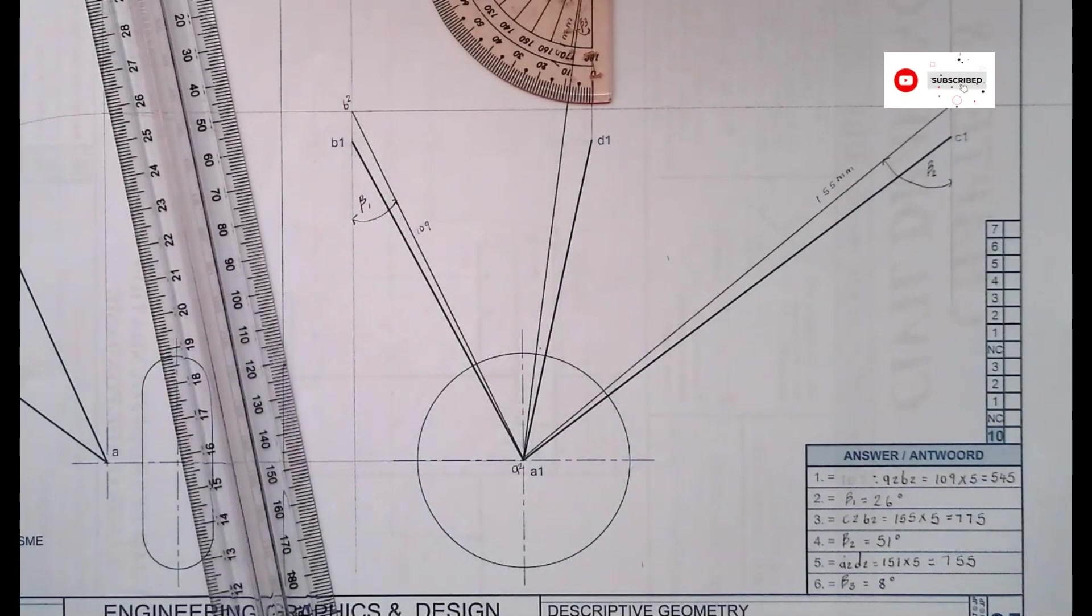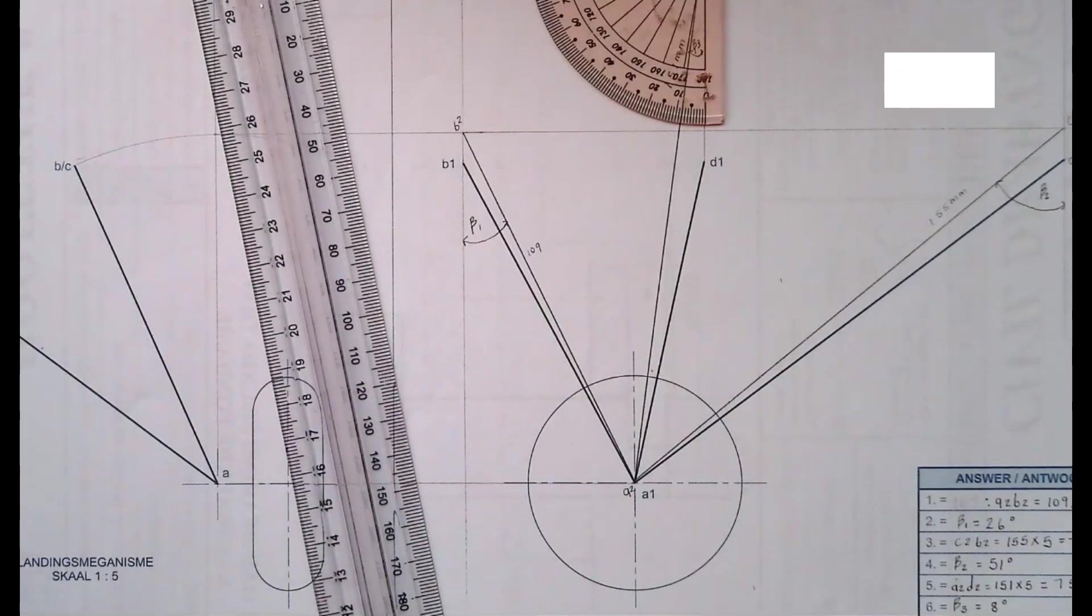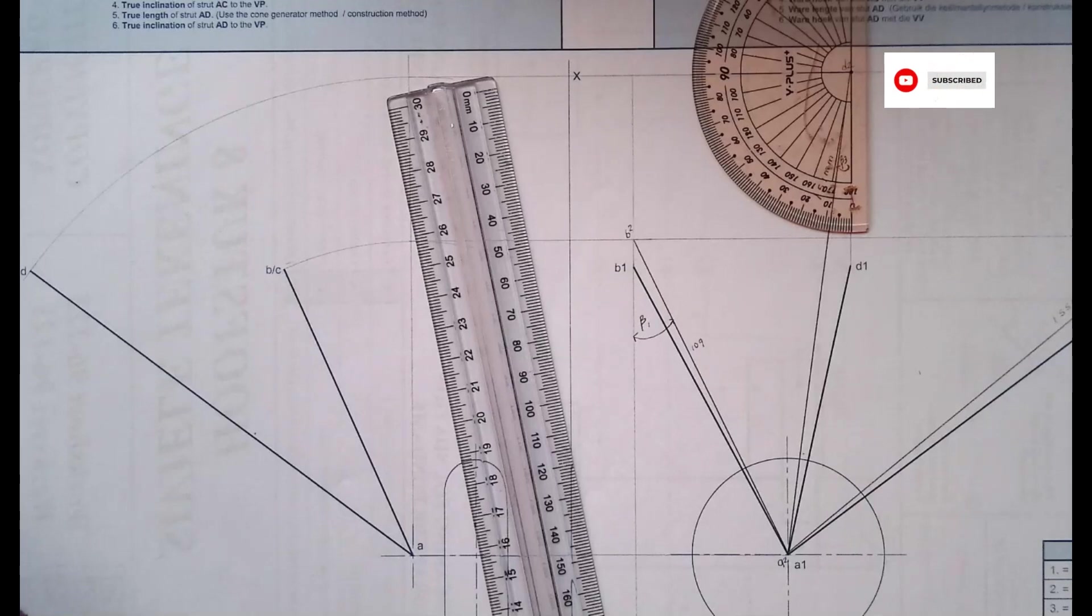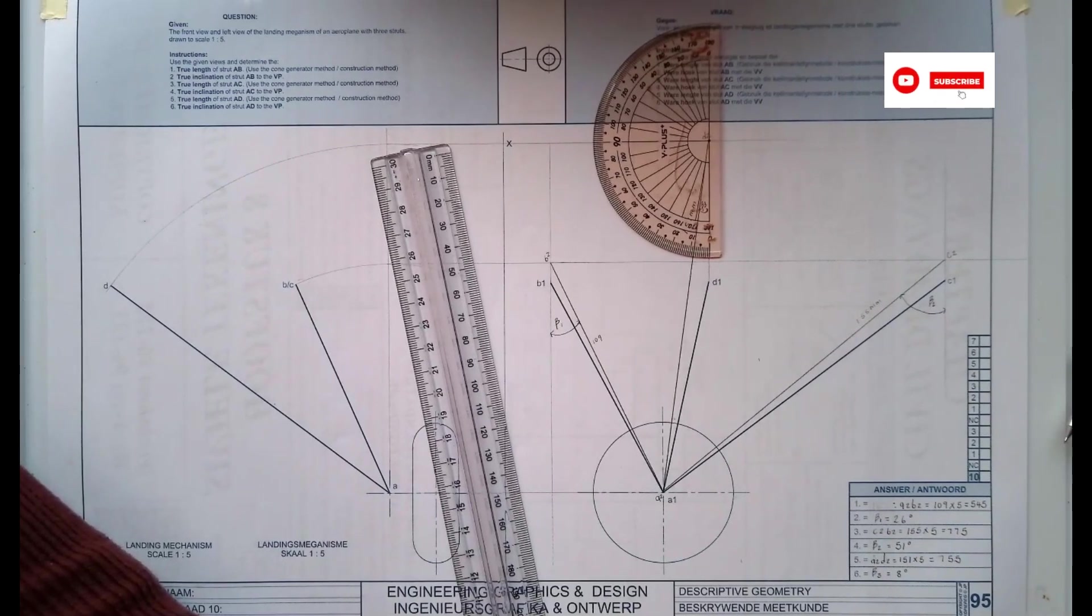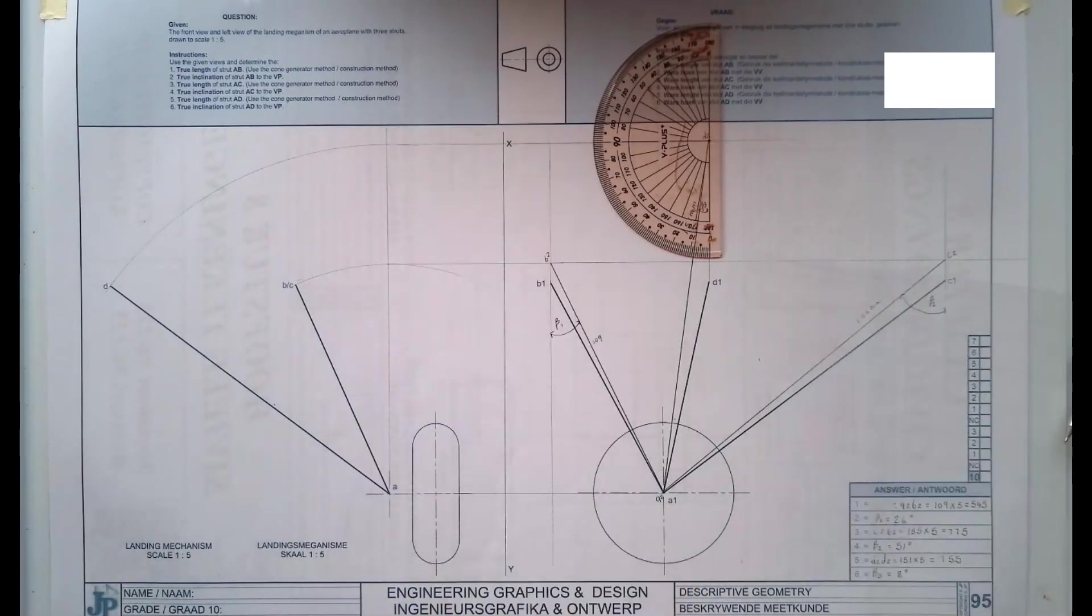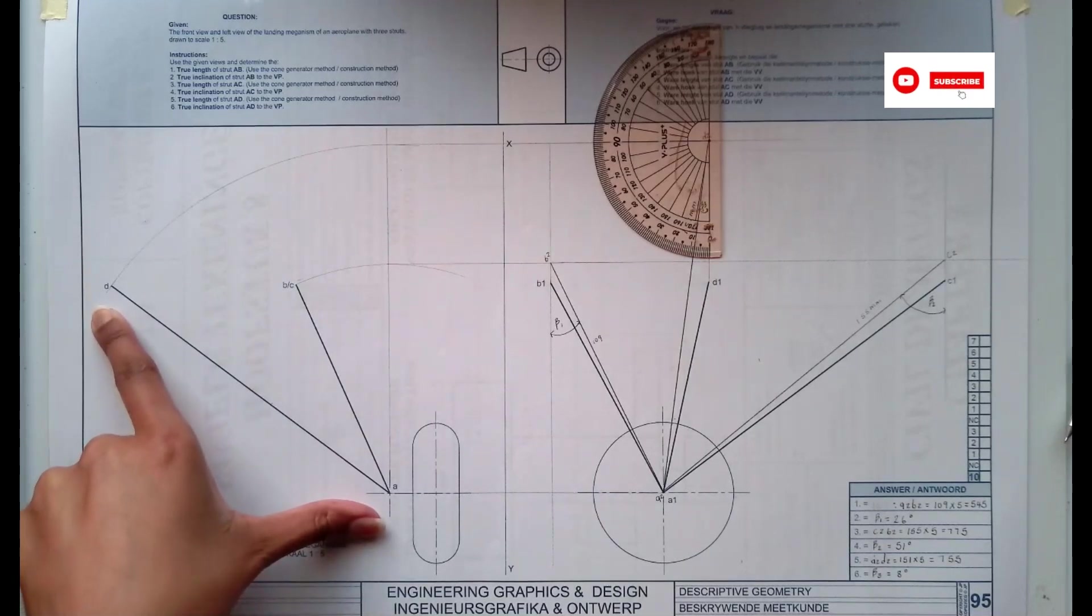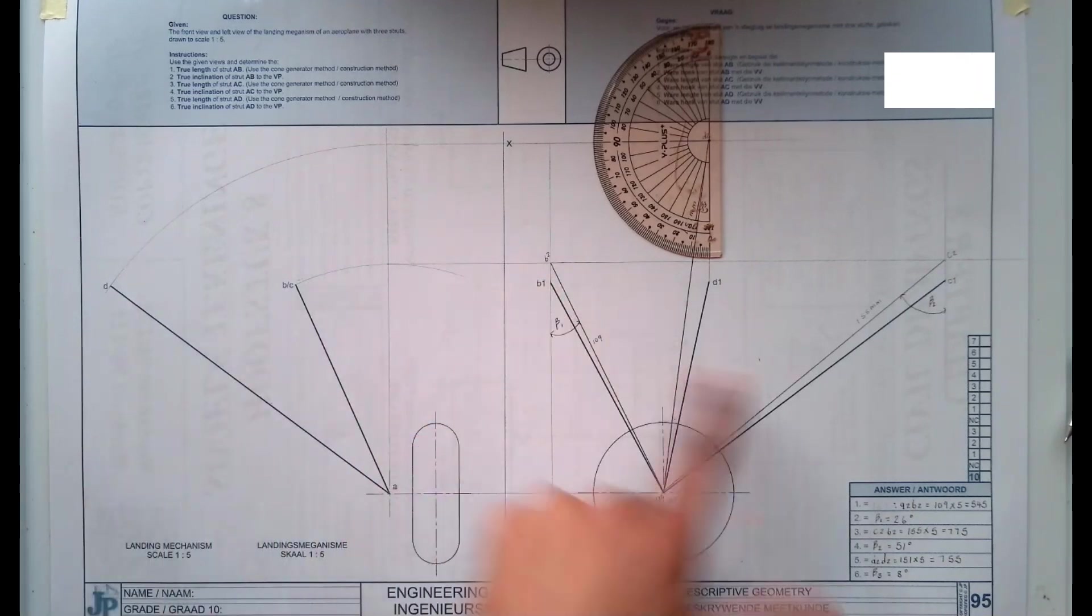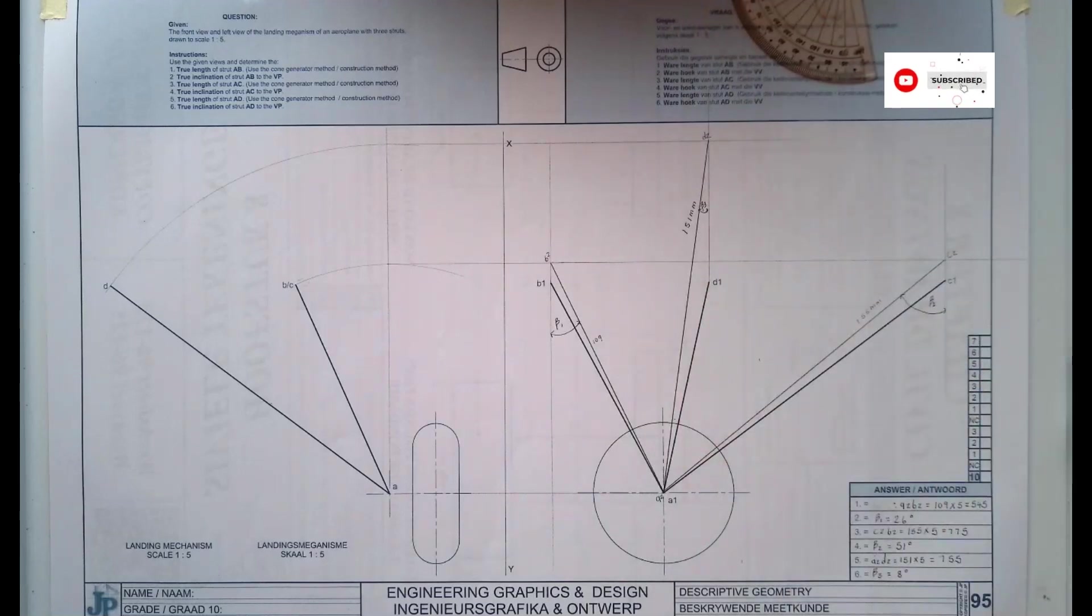So that is how you do page 95. You get the true length and the true inclination. So this is the front view, it's the one that has the original view. Then you can see that these ones are sort of copies. This is the one that you use to get your inclination. I hope this video helped you. Thank you so much for watching. I will see you on the next one.